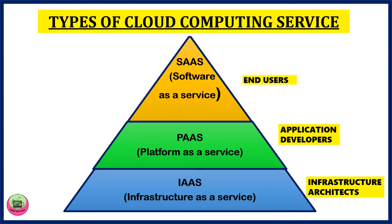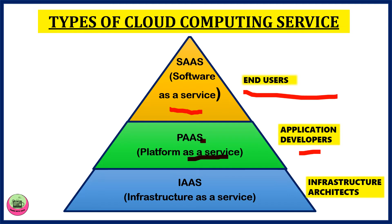Coming to the types of cloud computing services, there are three types. SaaS — software as a service, which is available for end users. PaaS — platform as a service, which is available for application developers. IaaS — infrastructure as a service, which is available for infrastructure architects.